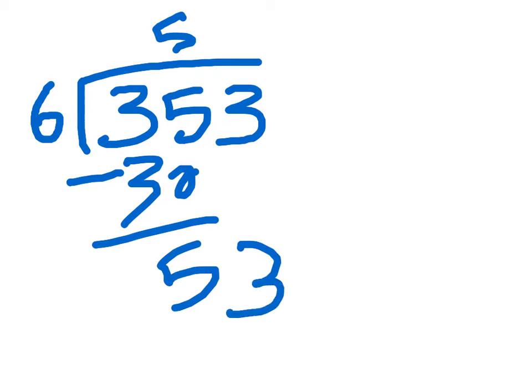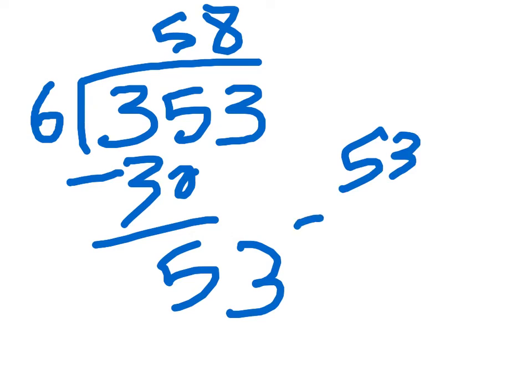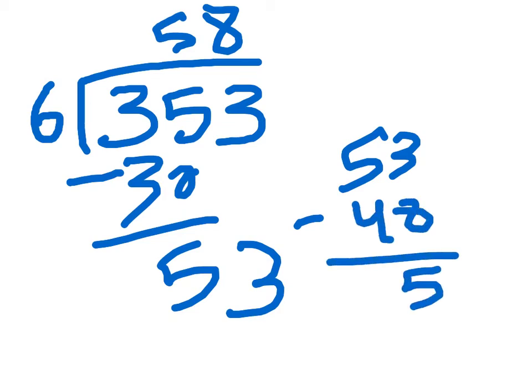Then 6 goes into 53, 8 times — that's 53 minus 48, equals 5. And so it's 58 with a remainder of 5.